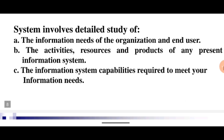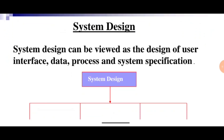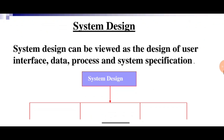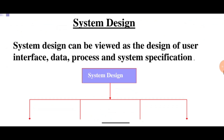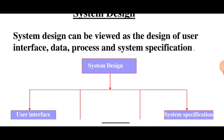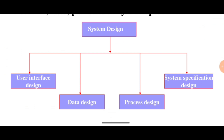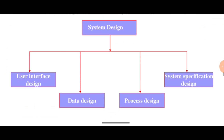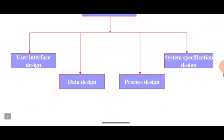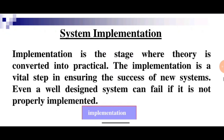The next phase is system design. In this phase we discuss how we design the system for the final product. System design can be viewed as the design of user interface, data, process, and system specification. System design is divided into four parts: user interface design, data design, process design, and system specification design.